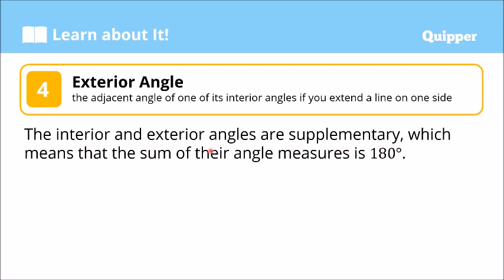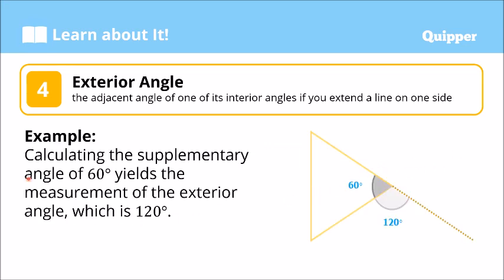The interior and exterior angles are supplementary, which means that the sum of their angle measures is 180 degrees. Let's have an example. This is the triangle from earlier, and one of its interior angles is 60 degrees. Now, if we extend a line — this line right here — we form another angle adjacent to this 60-degree angle. That adjacent angle measures 120 degrees.